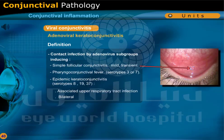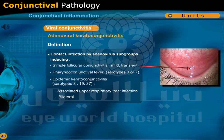Adenoviral keratoconjunctivitis is a contact infection by adenovirus subgroups inducing simple follicular conjunctivitis that is mild and transient, pharyngoconjunctival fever caused by serotypes 3 or 7, and epidemic keratoconjunctivitis caused by serotypes 8, 19, or 37.